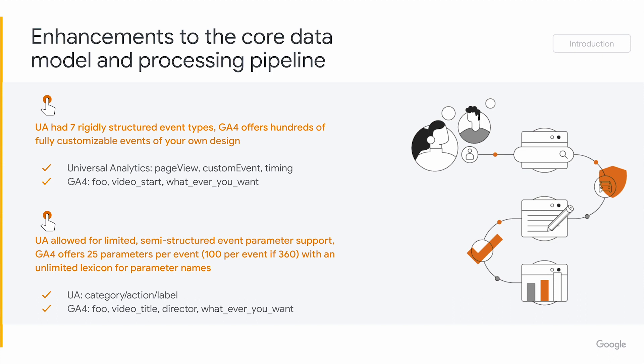Universal Analytics had seven rigidly structured event types. You can see a couple of the examples here — page view, timing, and then the one catch-all for all custom events: custom event. Google Analytics 4 has broken free of that paradigm and now can enable any set of any named events to be collected. You can name your events — as some examples here — foo, video start, or really whatever you want.